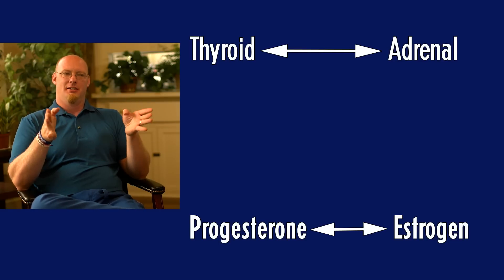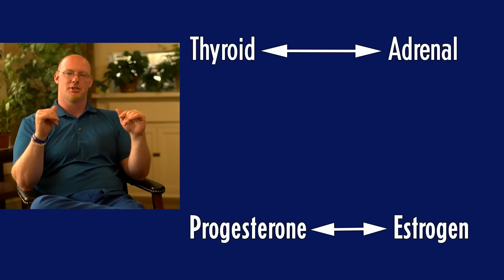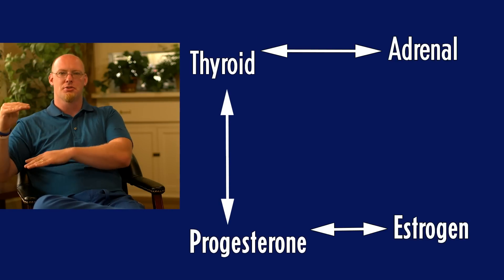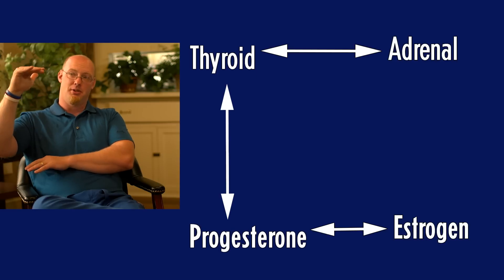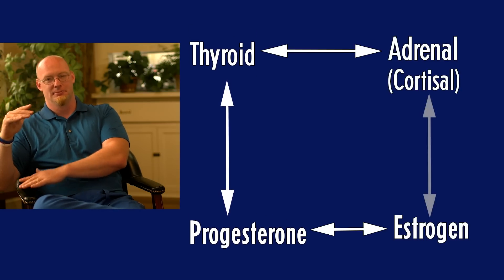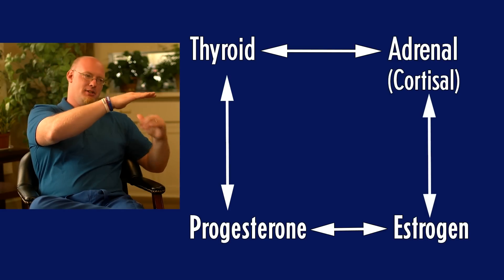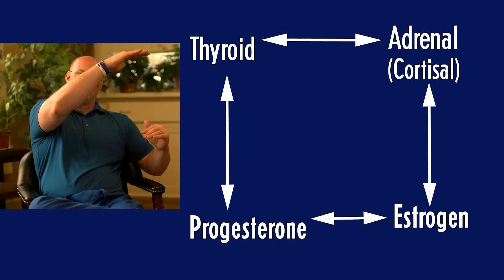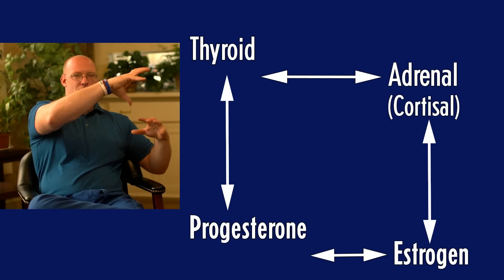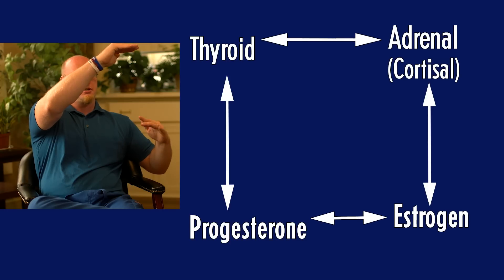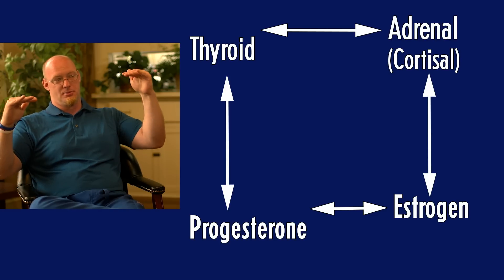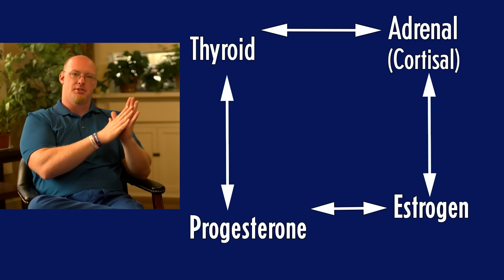Thyroid and progesterone also rise and fall together: if thyroid is high, progesterone goes up; if thyroid is low, progesterone drops. With the adrenals and estrogen, if cortisol goes up, estrogen goes up; if cortisol drops, estrogen drops. So if we get too stressed and cortisol goes up, it raises estrogen. If progesterone doesn't raise up with the estrogen, you end up in an estrogen-dominant situation.